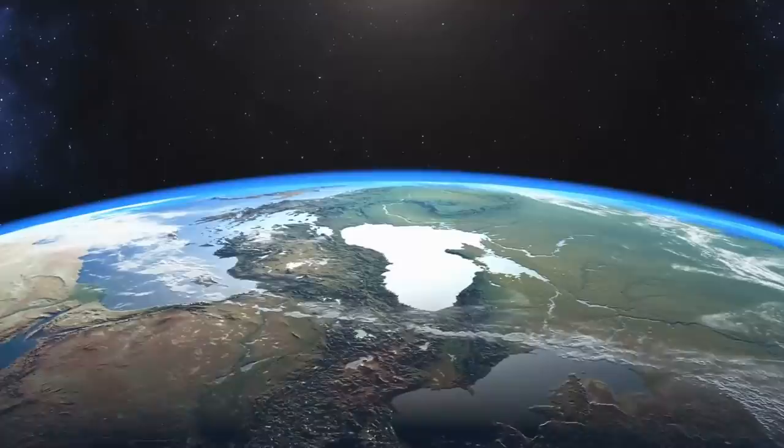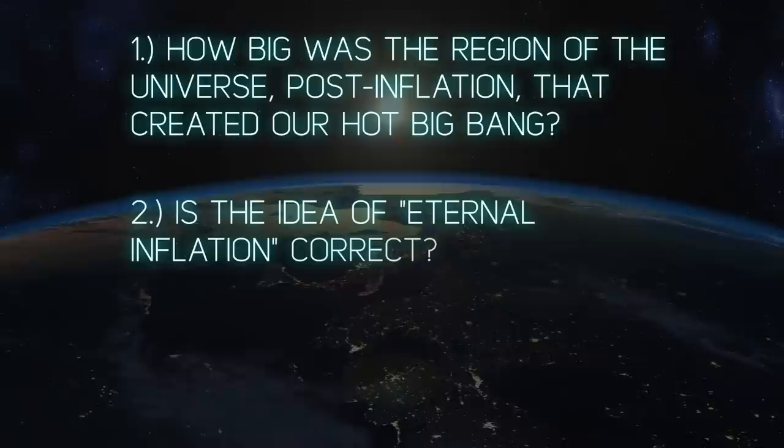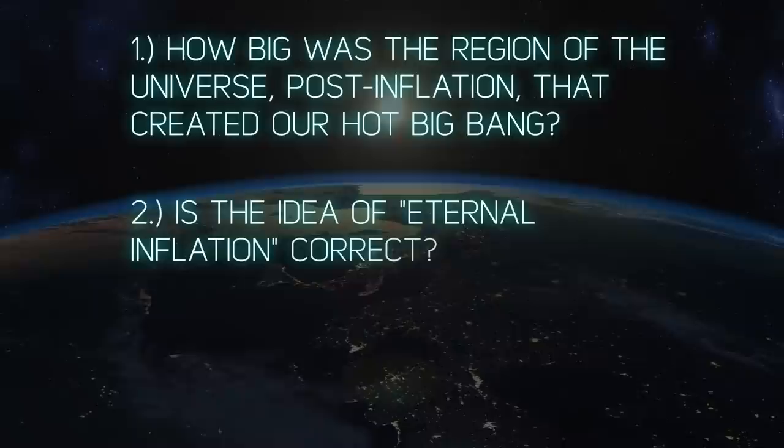The universe was expanding at a constant exponential rate, what we call cosmic inflation. This created new space so quickly that the smallest physical length scale, the Planck length, would be stretched to the size of the presently observable universe every 10 to the negative 32 seconds. Inflation came to an end in our region of space, but we still need answers to three questions: How big was the region of the universe post inflation that created our hot Big Bang? Is the idea of eternal inflation correct? And finally, how long did inflation go on prior to its end and the result in hot Big Bang?